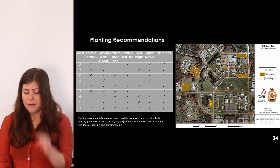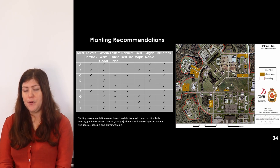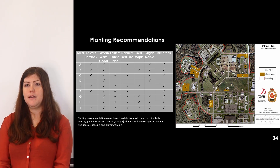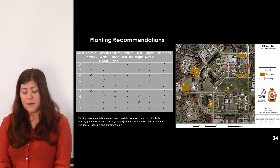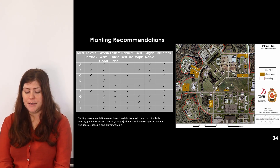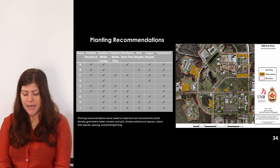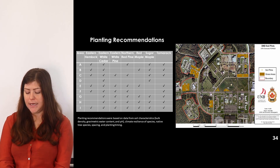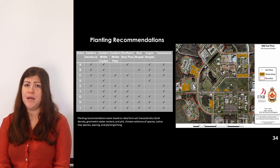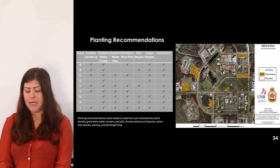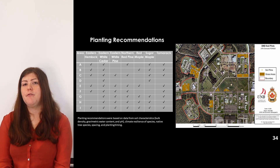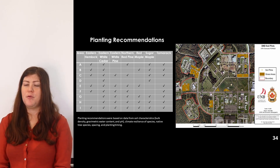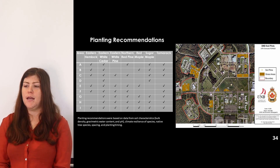An objective of DND was to increase green space by naturalizing nine specific areas. Using soil data gathered at these areas — including bulk density, gravimetric water content, and pH — alongside species-specific data such as climate resilience, spacing, and timing of planting, the team created planting recommendations specific to each site. Planting recommendations for street trees were based on different values and can be seen in Appendix 9.